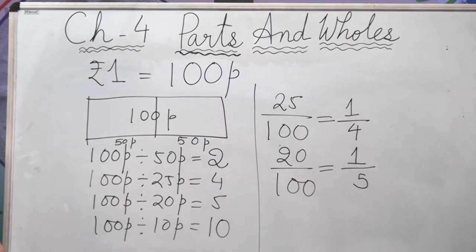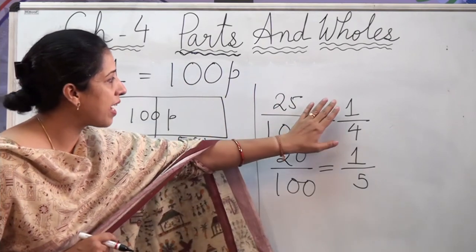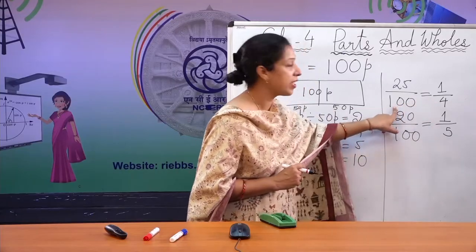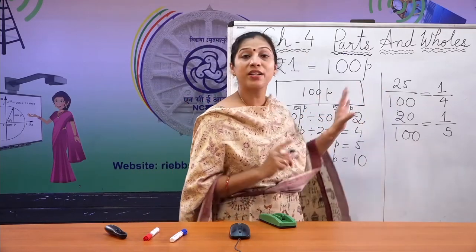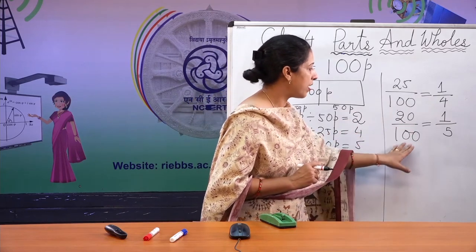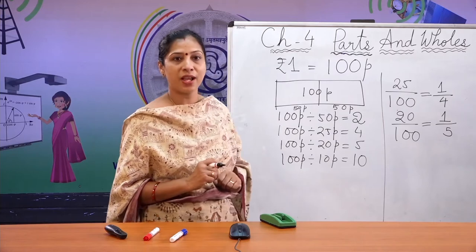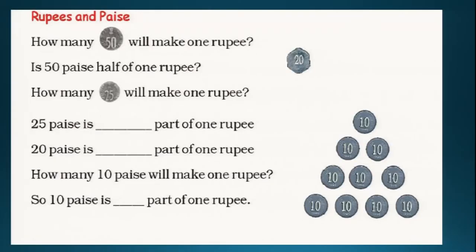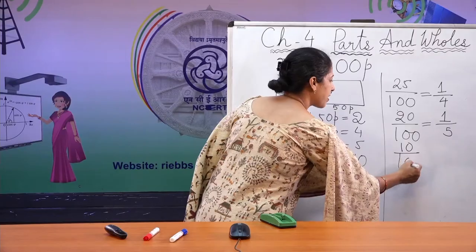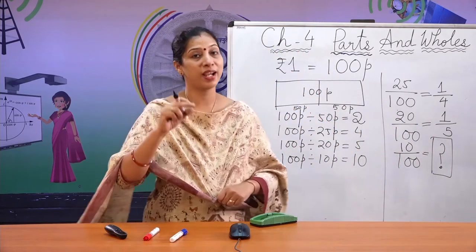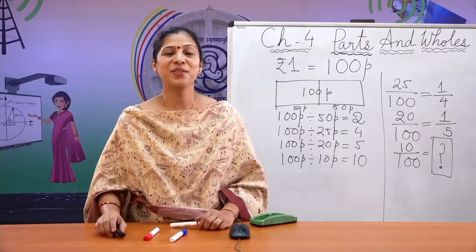Now, this connects to equivalent fractions. Can you see the relationship? 1/4 equals 25/100 — they look completely different in numbers but the value is the same. Similarly, 20/100 equals 1/5. You can find out what part 10 paise is of 1 rupee on your own. Now let us go to the next question.